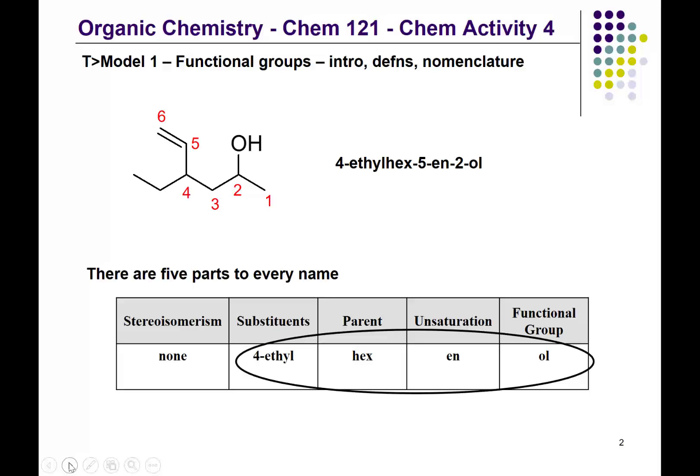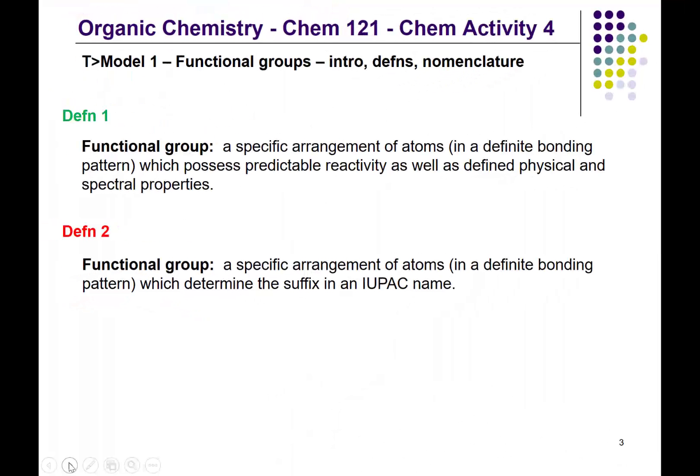We'll be doing many more examples of naming organic compounds that include functional groups, but I need to highlight the idea of some definitions of functional groups. There are two definitions. The broader definition, as typically used by an organic chemist, is that a functional group is a specific arrangement of atoms in a definite bonding pattern that possesses predictable reactivities as well as defined physical and spectral properties — so we're interested in how the functional group defines the behavior of an organic compound.